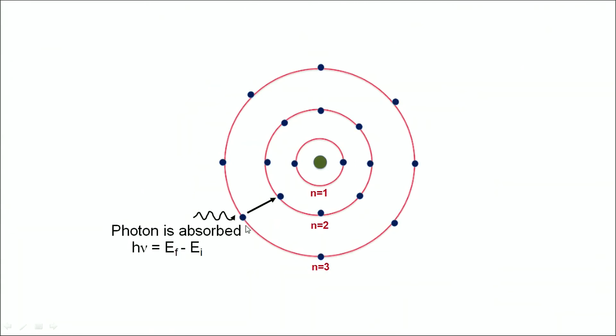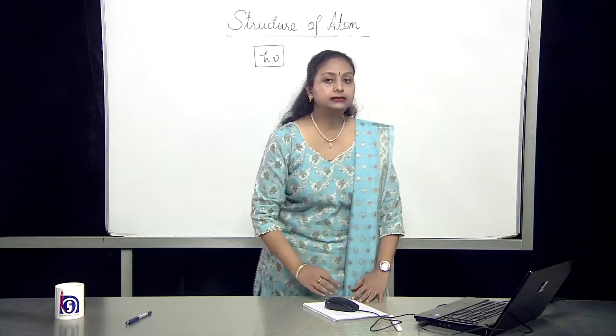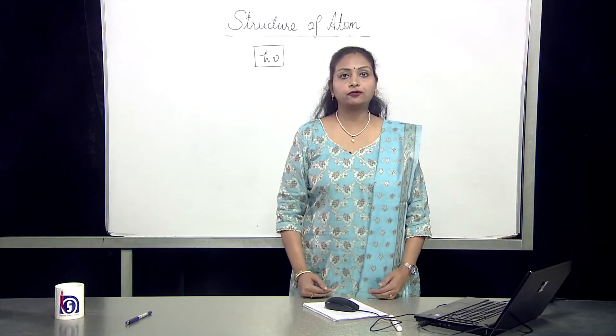Then this electron jumps from an outer orbit to an inner orbit. So, the emission and the absorption takes place in discrete form.